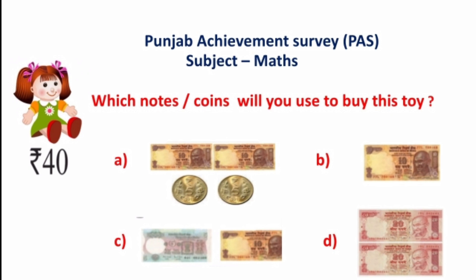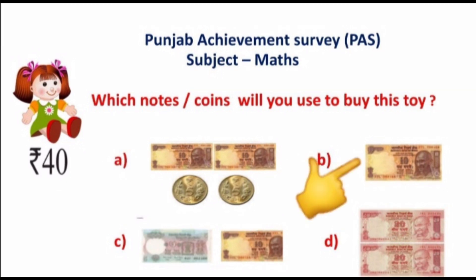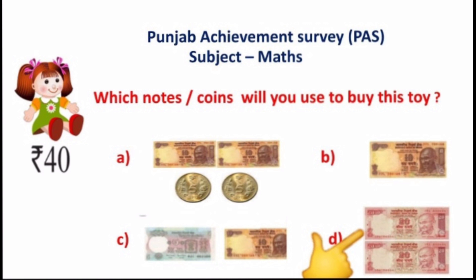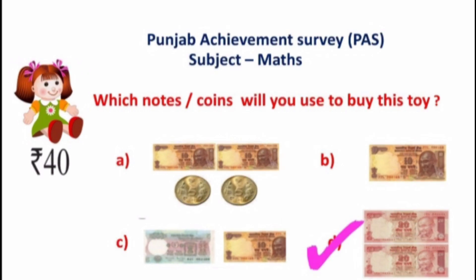Now students, it's time for a pass question. Our question is: which notes or coins will you use to buy this toy? We have 4 options. Option A has 2 notes of rupees 10 and 2 coins of rupees 5. Option B has 1 note of rupees 10. Option C has 1 note of rupees 5 and 1 note of rupees 10. Option D has 2 notes of rupees 20. The value of 2 notes of rupees 20 is equal to rupees 40, so our answer is option D.